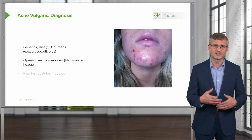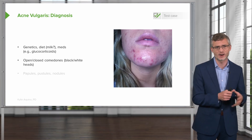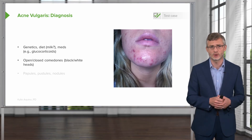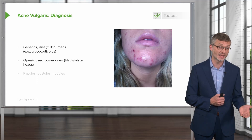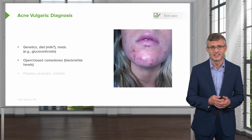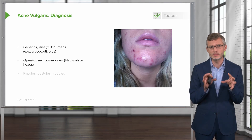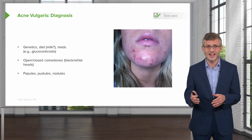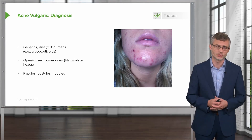Eventually, those papules with follicular hyperkeratinization can progress, become more inflammatory, and then you're developing what's called comedones. Open comedones are called blackheads, and closed comedones are called whiteheads. These are essentially plugged, keratin and sebum-filled hair follicles. Ultimately, over time, those can progress to pustules and nodules.